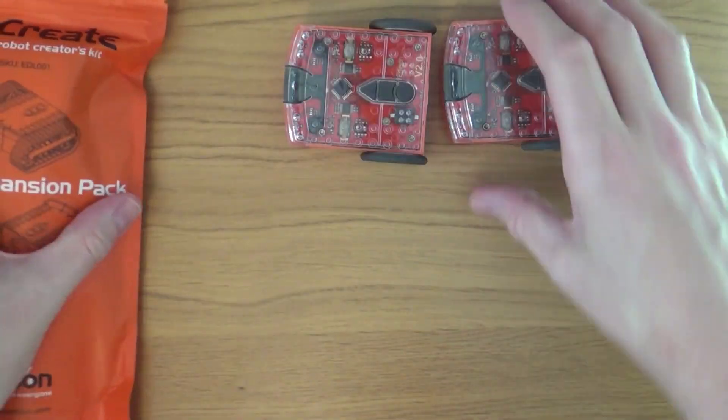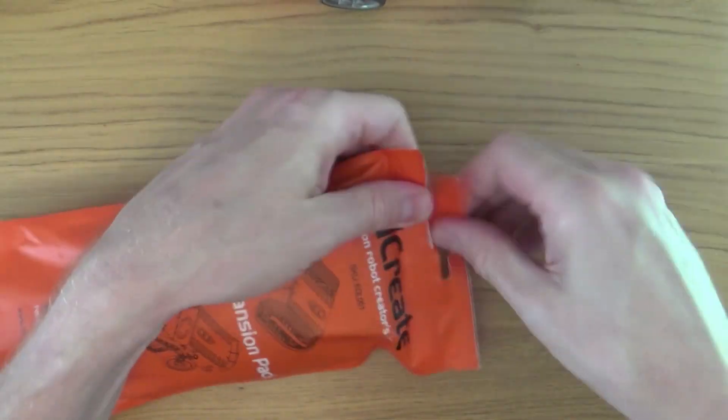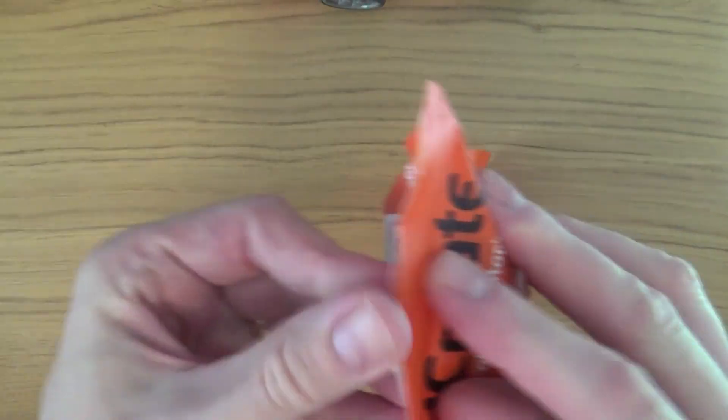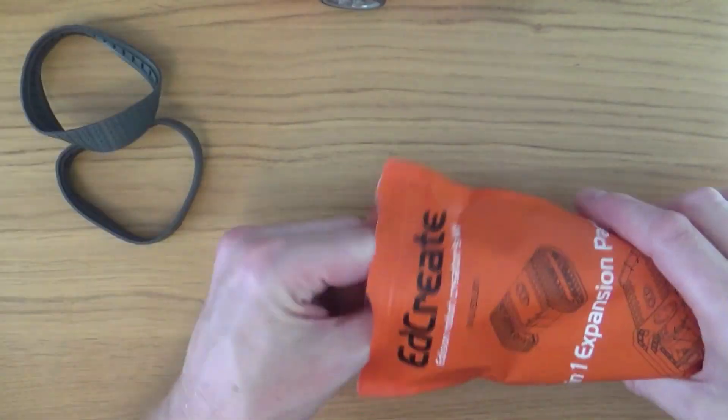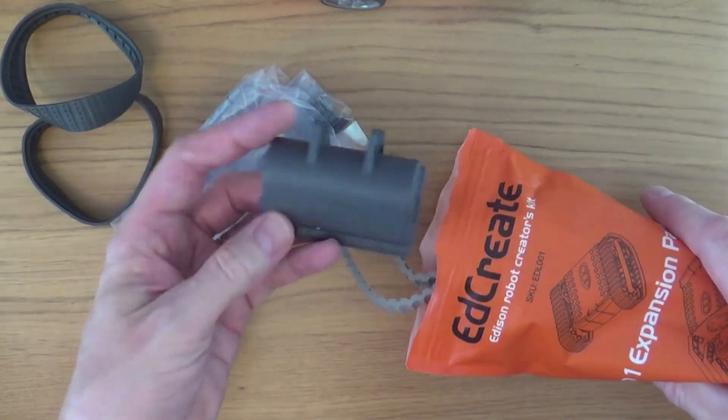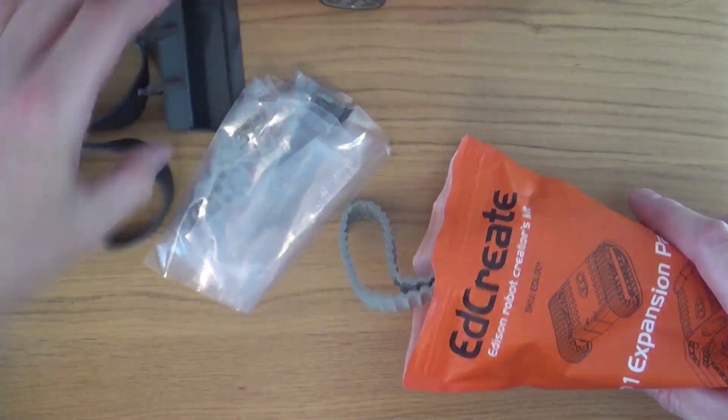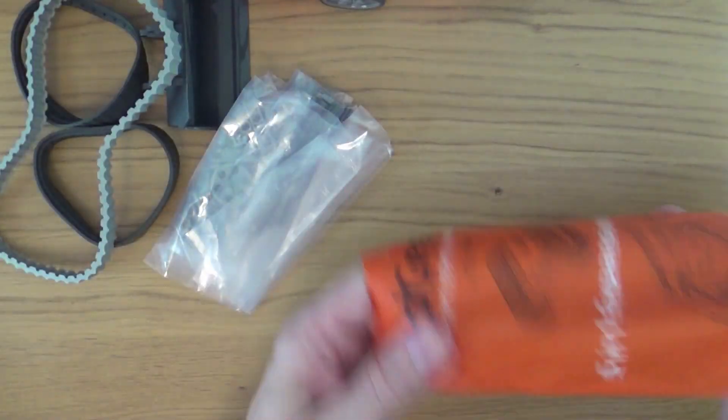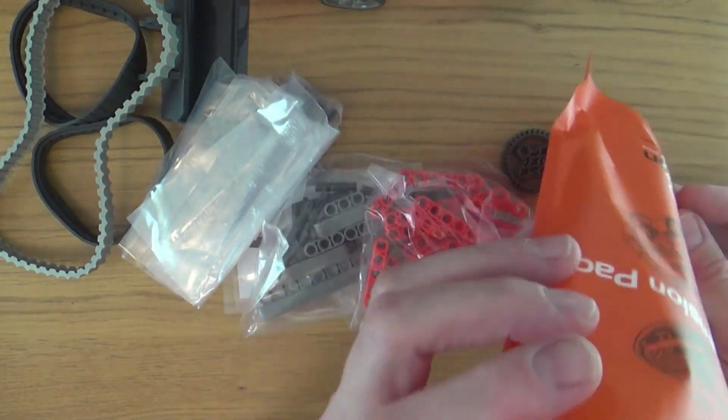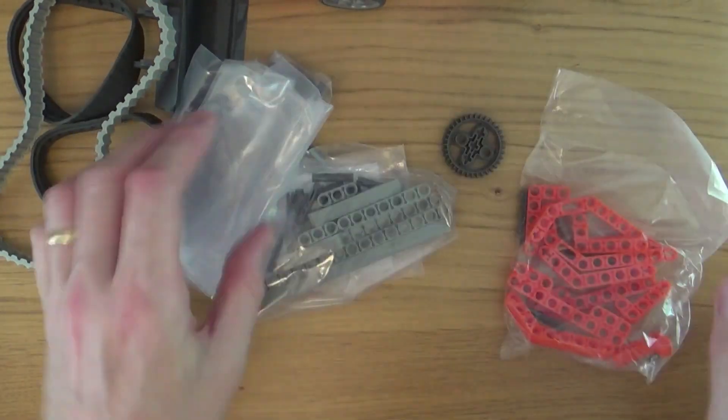Let's take a look inside the EdCreate kit then. This is a construction system which consists of 115 interlocking building blocks, pegs, gears and other parts which allow you to build five EdBuild projects, as well as a range of open-ended STEM challenges. Look out for the video when I build all five projects.